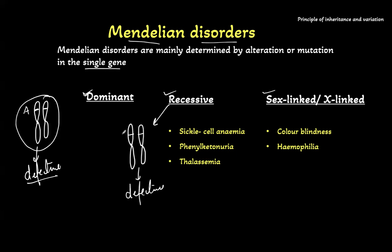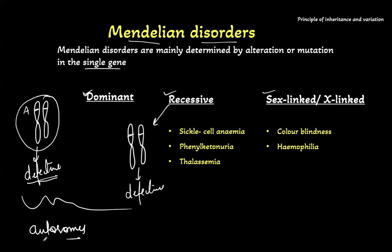We know the principle of dominance and recessive. In dominant, if only one gene is defective, the defective phenotype will come. For a recessive one, both the genes have to be defective. Here we are talking about autosomes — autosomes are those chromosomes which are not sex chromosomes.